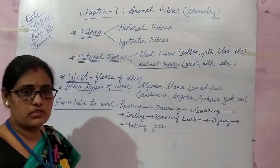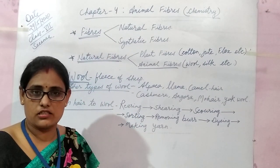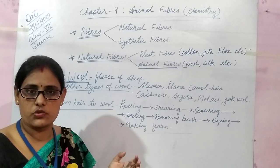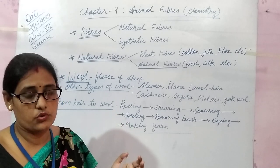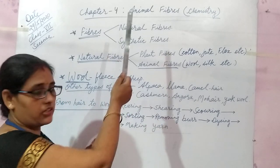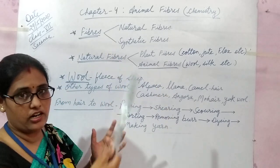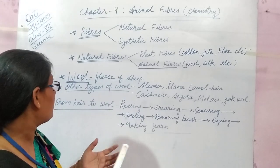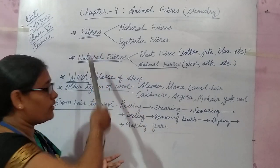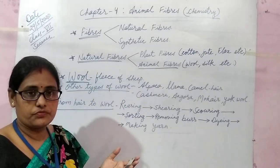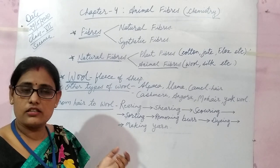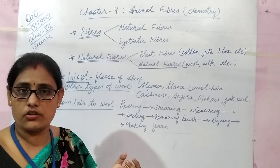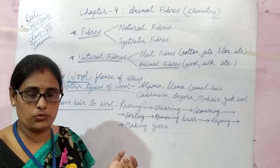Fibers. In Class 6, we have studied that fibers are very thin strands used to make clothes. Fibers make yarns and yarns make clothes, that is fabrics. Fibers are the thin strands used for making yarns and clothes.